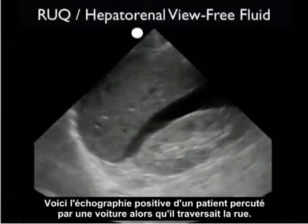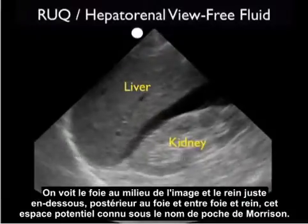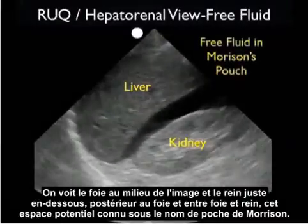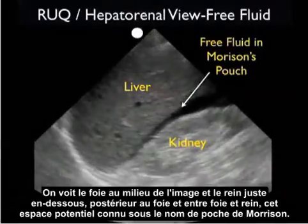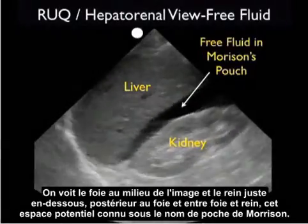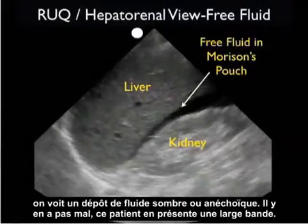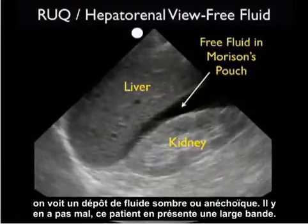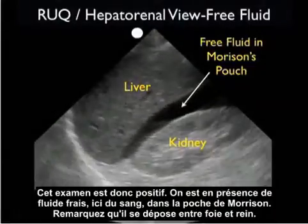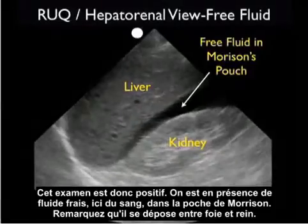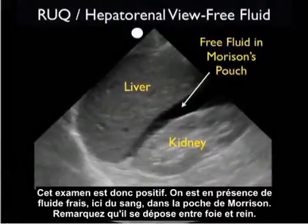Here's a positive ultrasound examination from a patient who was hit by a car while crossing the street. We see the liver in the middle of the image, the kidney located inferior and posterior to the liver, and in between them in the potential space known as Morrison's pouch, we see a dark or anechoic fluid collection — actually a pretty large stripe in this patient. This represents fresh fluid, in this case blood, within Morrison's pouch, layering out between the liver and kidney.